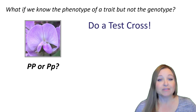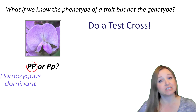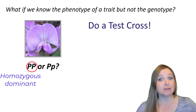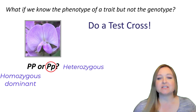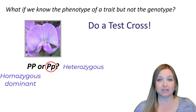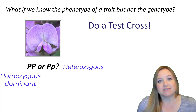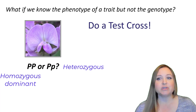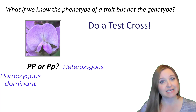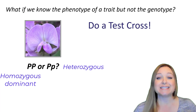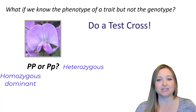However, if we have a purple flowering pea plant, we don't know if it's homozygous dominant (big P, big P) or whether it's heterozygous — meaning it has the dominant big P allele but also the recessive little p allele. So if we see the phenotype but don't know the genotype, we can do a test cross to determine the genotype of this unknown organism.